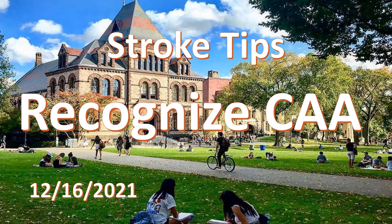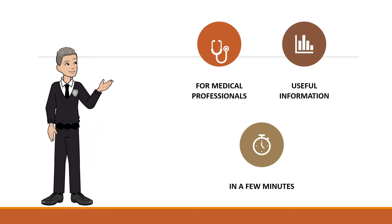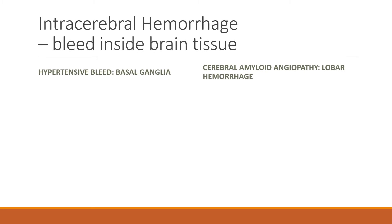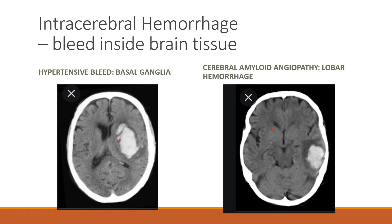Hello, we're going to talk about CAA today. Stroke Tips is for medical professionals — we provide useful information within a few minutes. For intracerebral hemorrhage, meaning bleeding inside the brain tissue, there are two main types. Hypertensive bleed tends to occur in the basal ganglia or the deep part of the brain. Cerebral amyloid angiopathy tends to cause a lobar hemorrhage close to the surface of the brain.